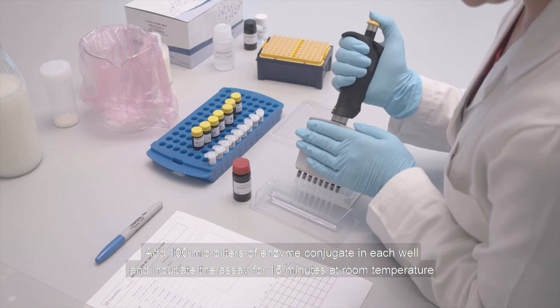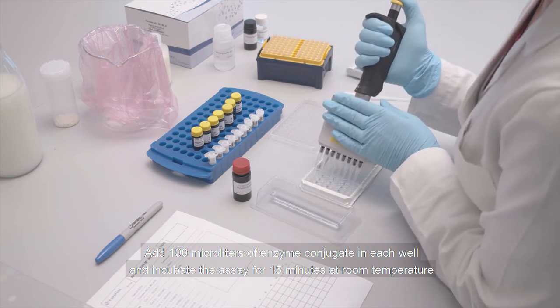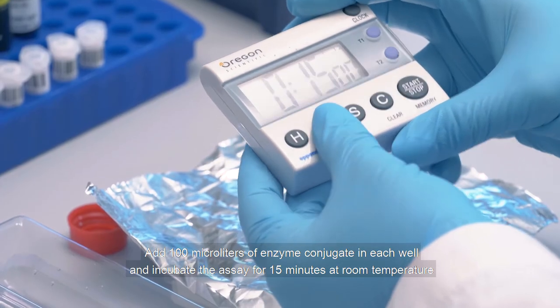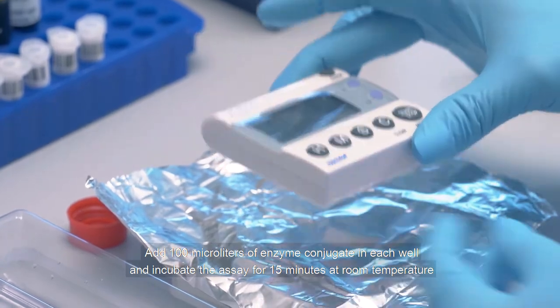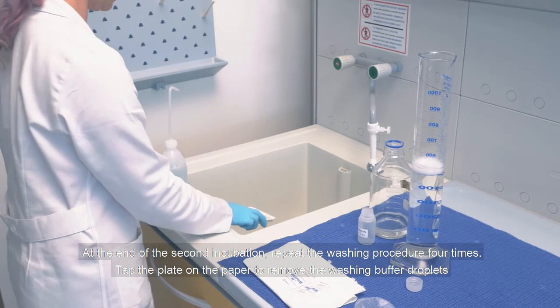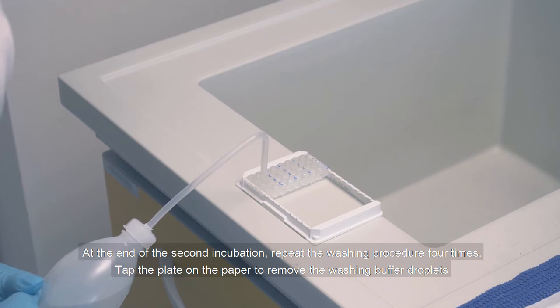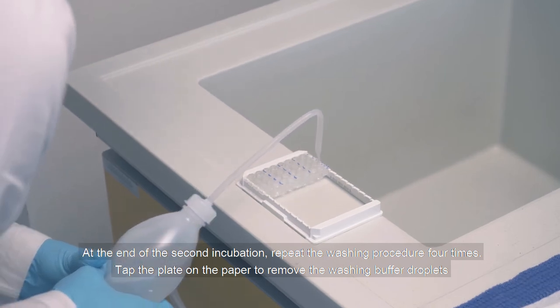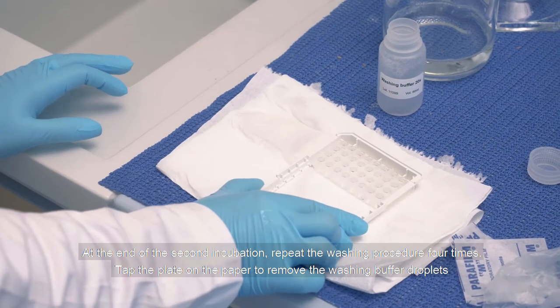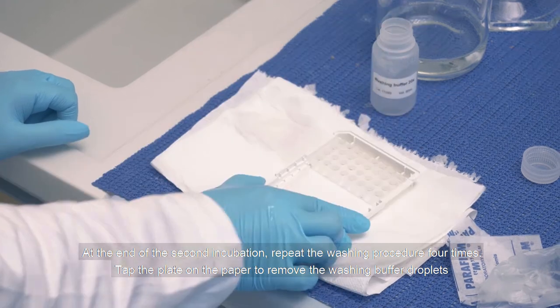Add 100 microliters of enzyme conjugate in each well and incubate the assay for 15 minutes at room temperature. At the end of the second incubation, repeat the washing procedure 4 times. Tap the plate on the paper to remove the washing buffer droplets.